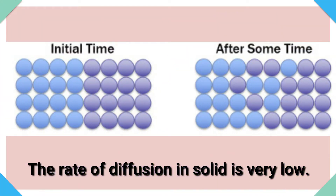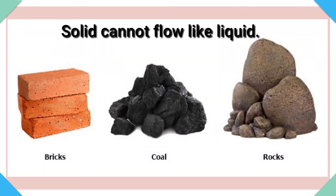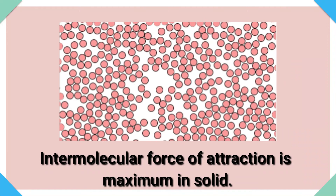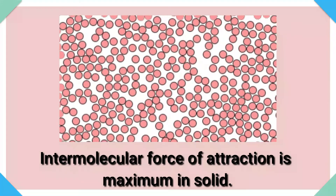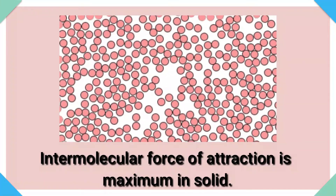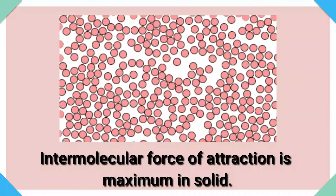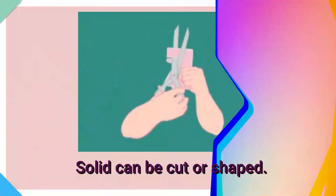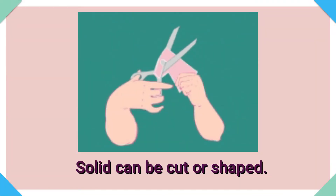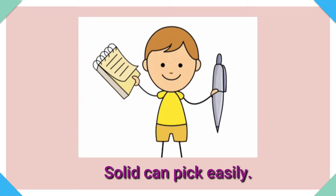The rate of diffusion in solid is very low because of the fixed arrangement of their particles. Solid cannot flow like liquid. The intermolecular force of attraction is maximum in solid as the particles are closer to each other. Solid can be cut or shaped. Solid can be picked up easily.